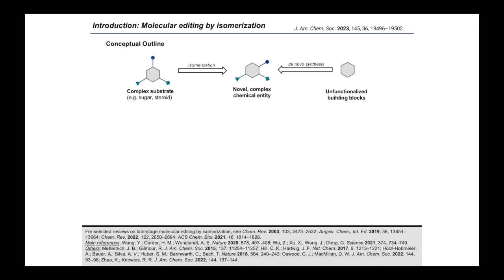This approach enables us to harness abundant feedstocks like sugars and steroids to access unique chemical entities with unconventional functionalization patterns. Notably, these one-step isomerization reactions offer a more efficient and sustainable alternative to de novo syntheses, providing a step and atom economic route to complex molecules.